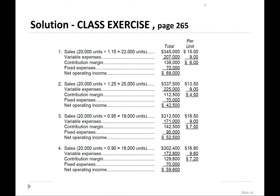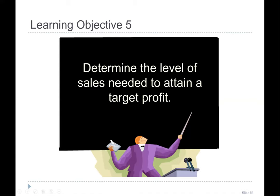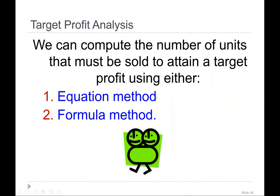Let's take a 10-minute break and then we start again. Now our fifth learning objective is to determine the level of sales needed to attain a target profit. We can achieve this through either the equation method or the formula method — essentially these two are equal, they just differ in approach.